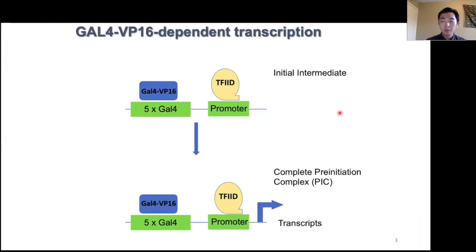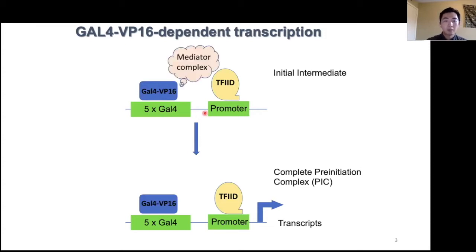When we talk about activator-dependent transcription, we usually focus on activators, motifs, and downstream signals. For many years of work from many labs, including our lab, there is a group of co-activators that may actually play an important role in the transcriptional activation step. Among these is the mediator complex. One prevailing model about mediator's role has been proposed using the GAL4-VP16 system, in which VP16 can bind to GAL4 sites and recruit mediator to the promoter proximal region and stabilize TF2D binding to the core promoter.